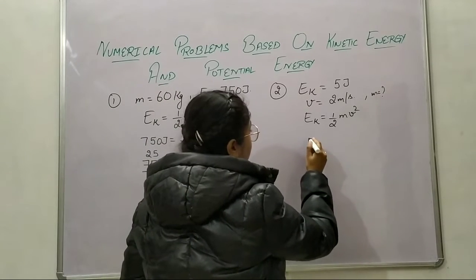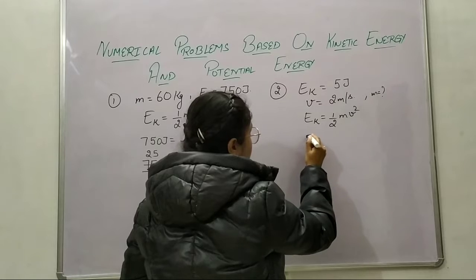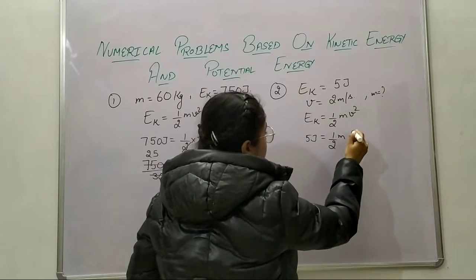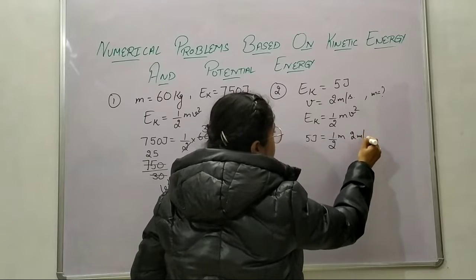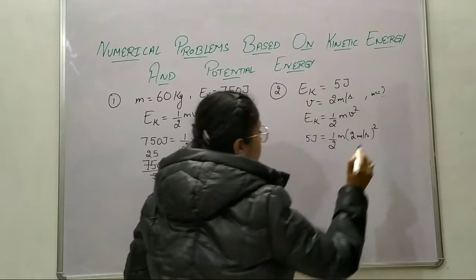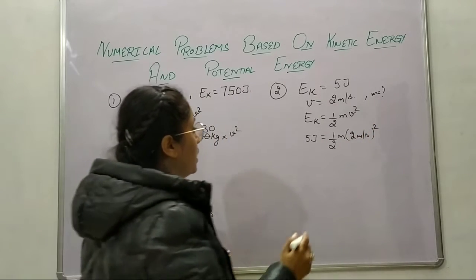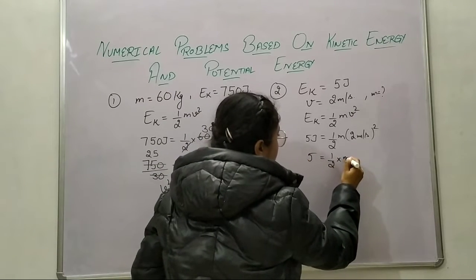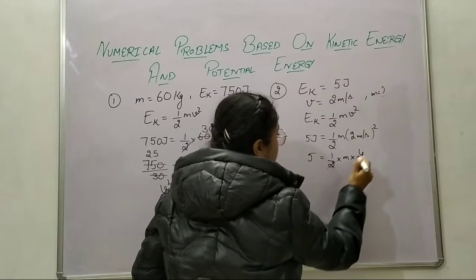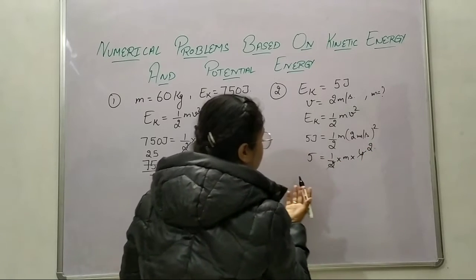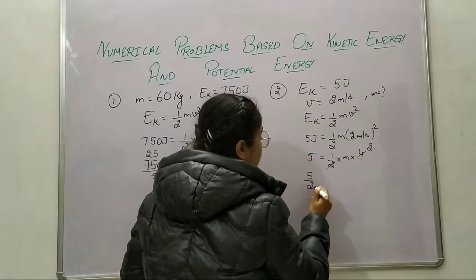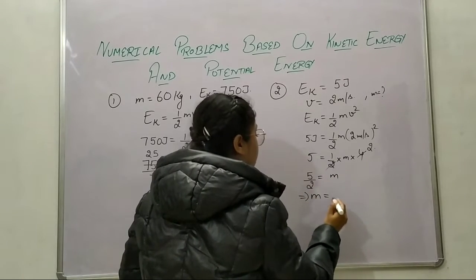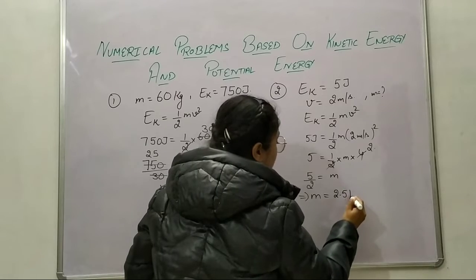We put in the values: 5 = (1/2) × m × (2)². So 5 = (1/2) × m × 4. The 2 cancels and comes to the other side dividing 5, so the mass comes out to be 2.5 kilograms.